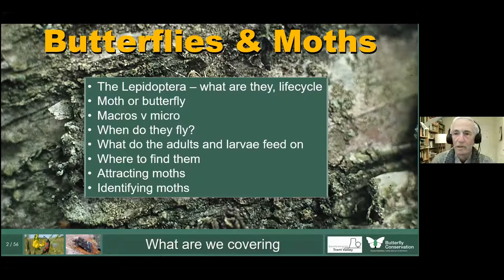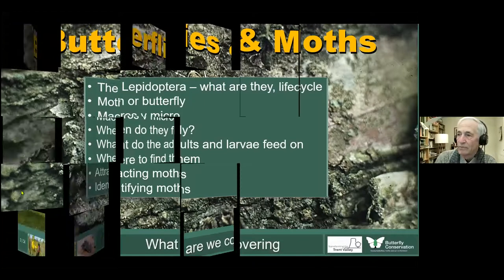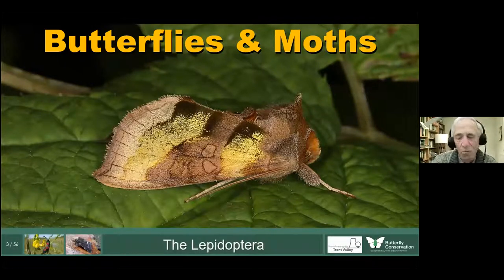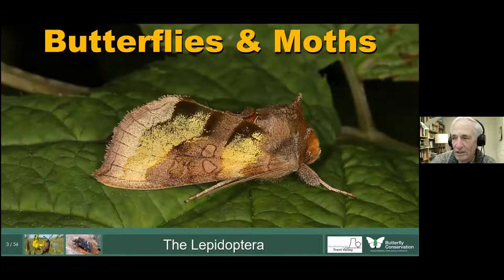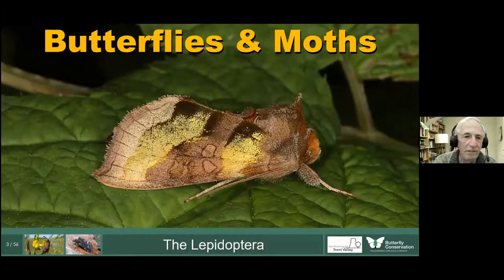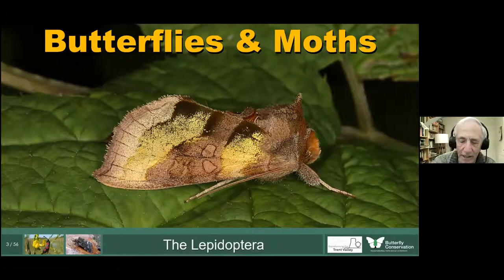Most people who start in moths are usually attracted by one particular moth — they think, 'Wow, how can something like that exist in this country?' This is my moth which did just that: the Burnished Brass. Those yellow colours are actually like gold leaf; it's the most incredible moth and it started me on this 40-year journey looking at moths.